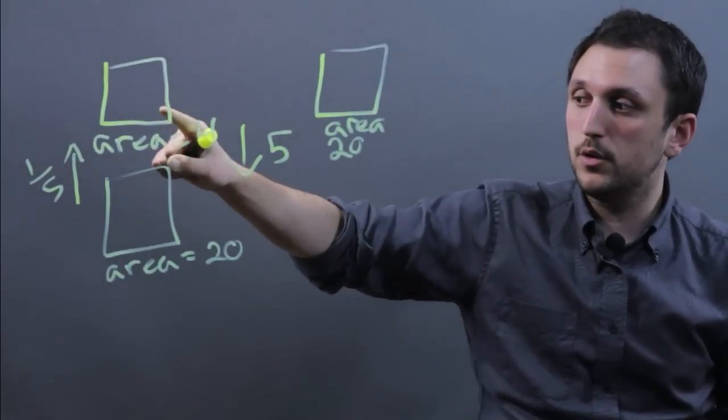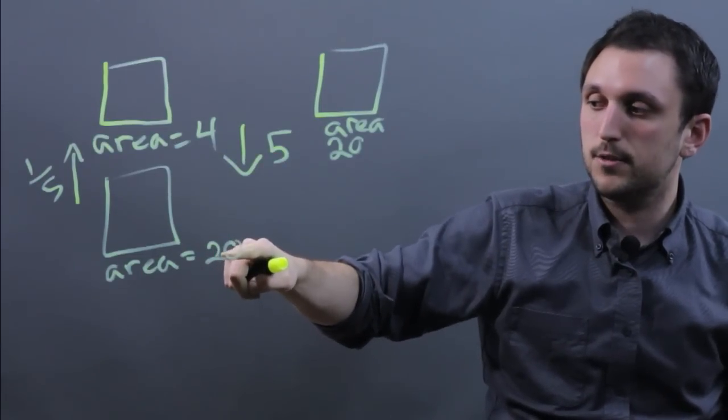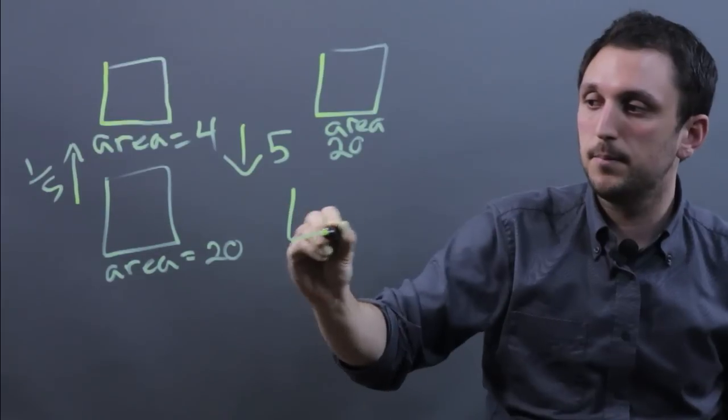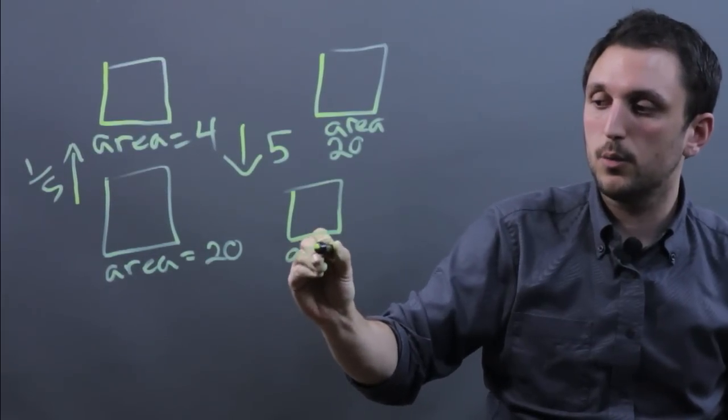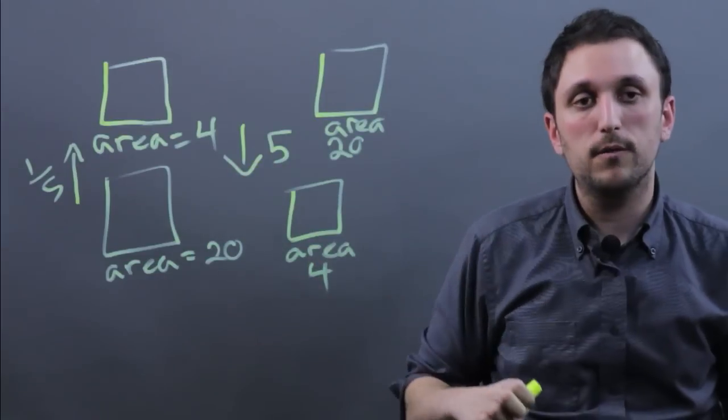If this was our original and this is our new one and we want to scale it back down, we're going to divide this by 5 or multiply it by 1 fifth. So here we would have area 4. And in this case, we divided by 5 or multiplied by 1 fifth.